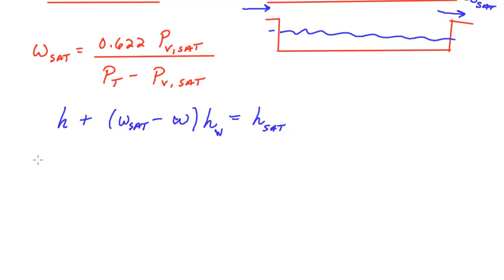Along the way, we knew that enthalpy of the moisture mixture, we said that is the enthalpy of the dry air portion plus the omega, our absolute humidity ratio, times the enthalpy at the saturated vapor condition. I'm going to use G for that subscript.